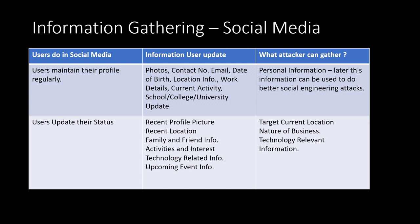If you repeatedly share content about, say, Samsung mobile, an attacker will understand you are interested in it and may infer there is a chance your target device is a Samsung mobile. They will then find a vulnerability in Samsung mobile and exploit it. Ultimately, what an attacker can obtain includes your current location, nature of business, what kind of person you are, and technology-relevant information — all of which can later be used for bigger attacks.